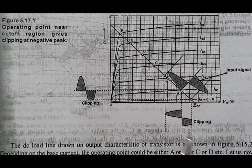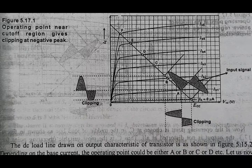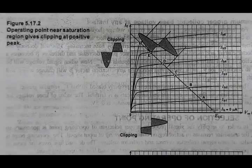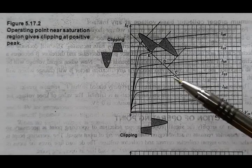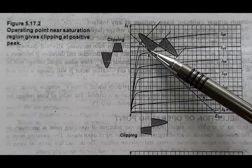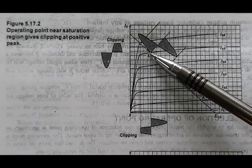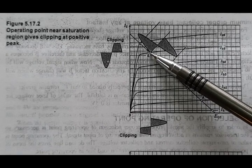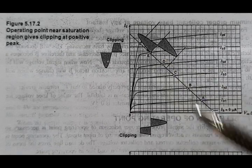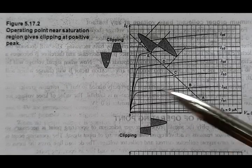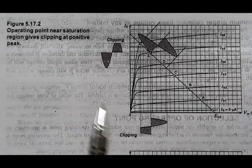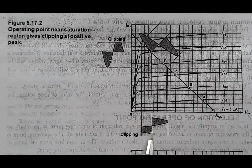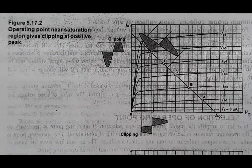Similarly, in figure number 5.17.2, here they have taken point E as the operating point. And as you can see, this Q point lies near to the saturation region. This is the input signal and the output signal will be like this — with clipping.